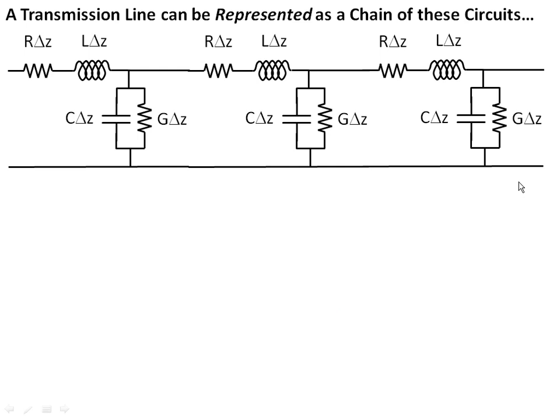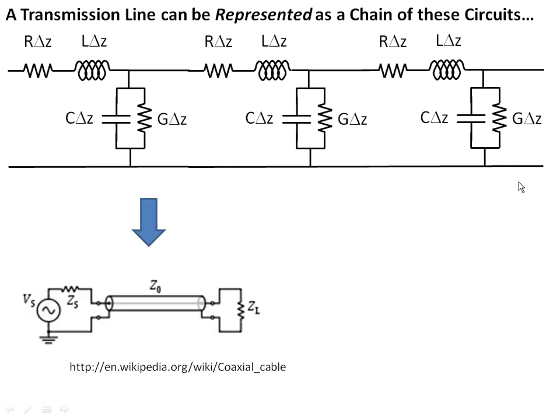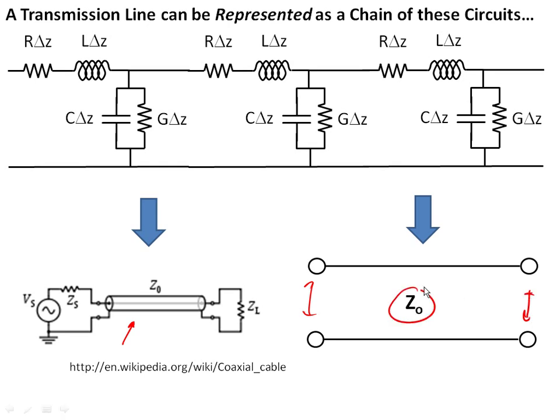We also know that we can represent a transmission line, these physical structures, as a chain of circuits using a lumped element or distributed circuit model. We've talked about this last time and come up with some equations. But we don't like to write schematically all these inductors, capacitors, or resistors. So oftentimes in a schematic you'll see something like this, where we represent a line that looks like a coax. Or more commonly you just have some input terminals here, some output terminals here, and a straight line. And we'll talk about this z naught in another lecture. That's actually what we call the impedance of the line.